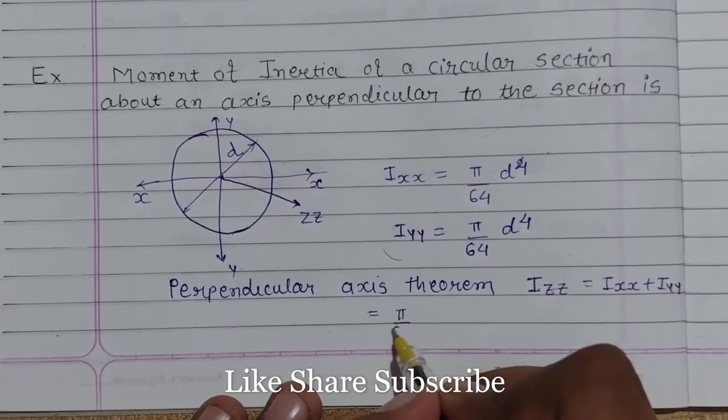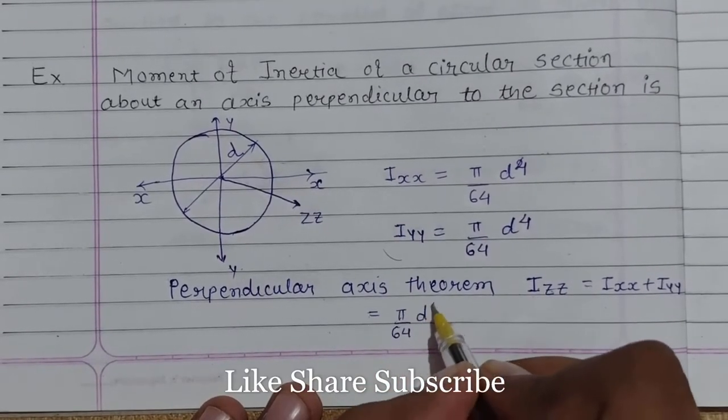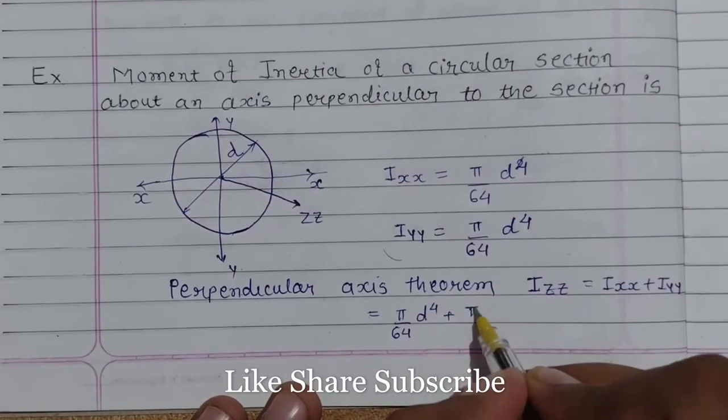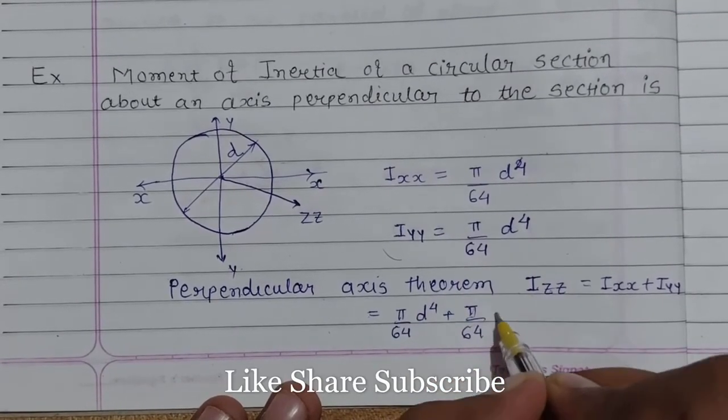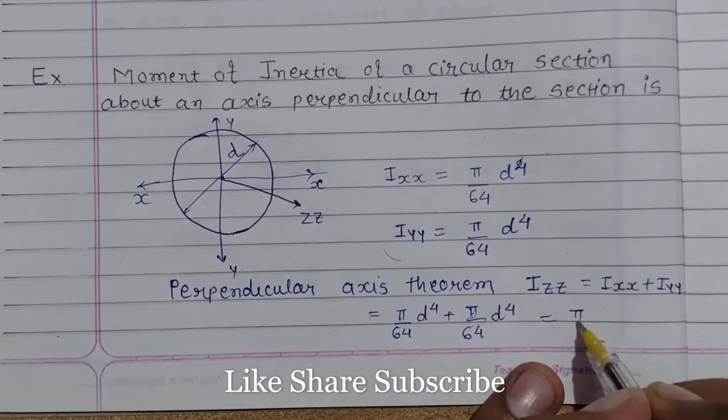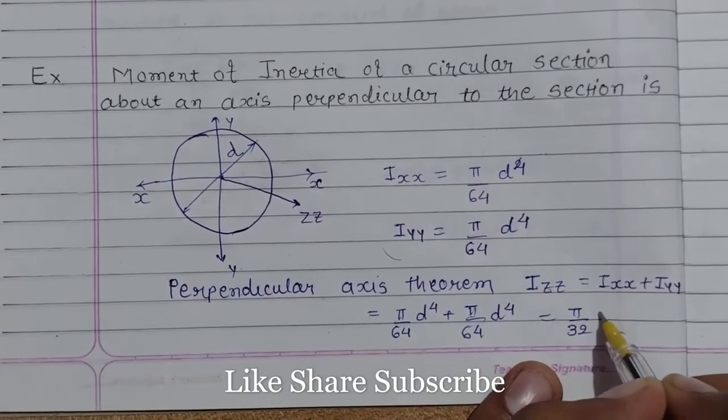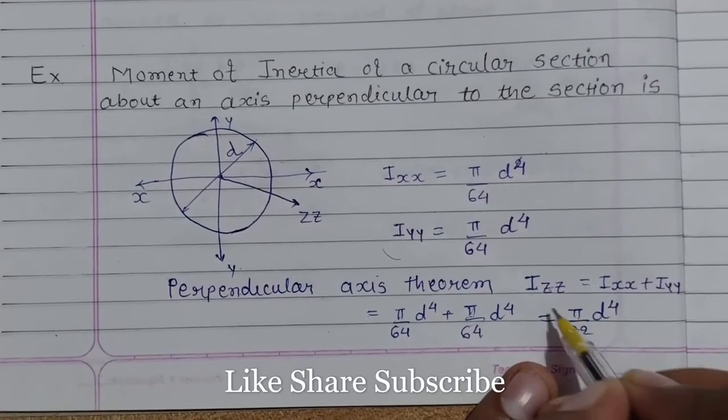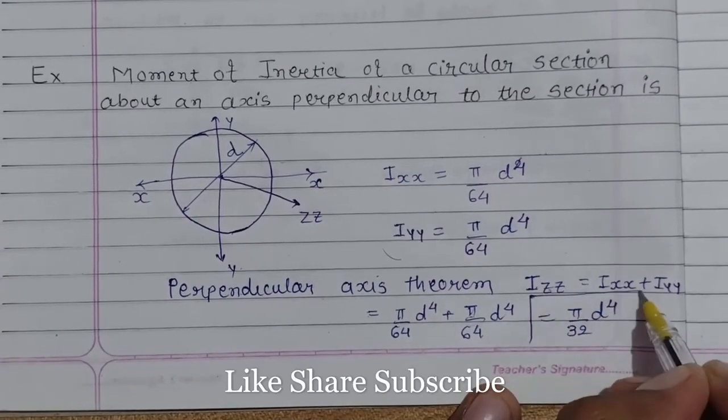So Izz is nothing but π/64 × d⁴ plus π/64 × d⁴. Ultimately this would be π/32 × d⁴. So this is our answer.